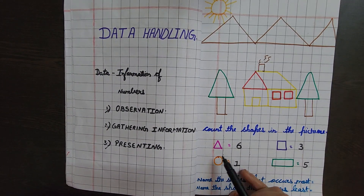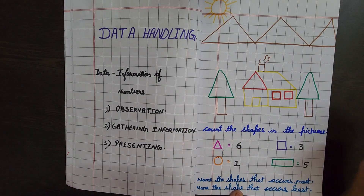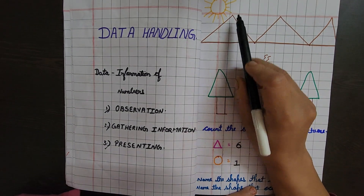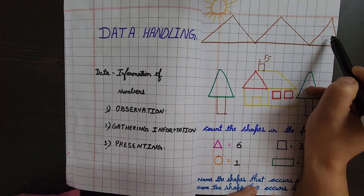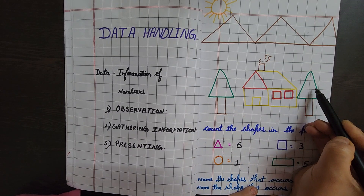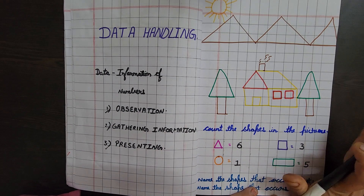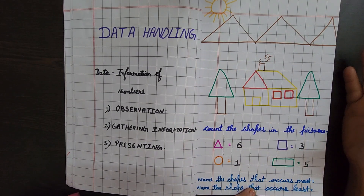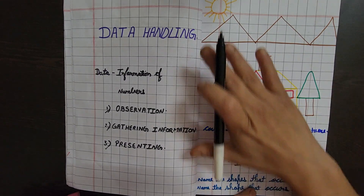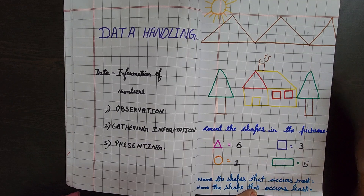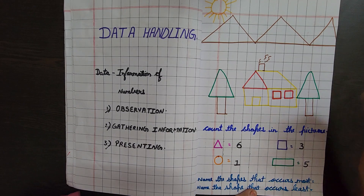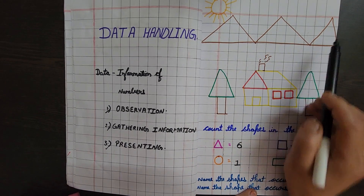Now how many triangles are in this scenery? One, two, three, four, five, six — total six triangles. This is gathering information: first we observed the scenery, then we found that six triangles are present.